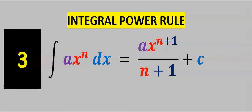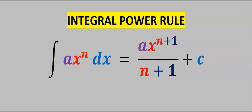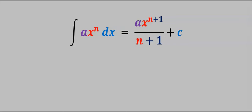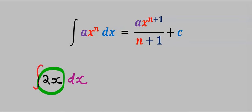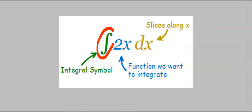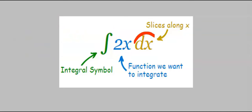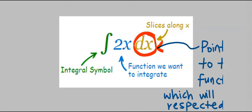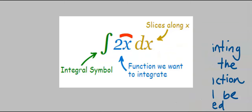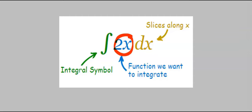Next, integral power rule. This formula is usually applied to some basic functions. For example, using this formula let's integrate 2x. The integral symbol is simply instructing us to apply integration, while the dx is pointing to the function which will be respected as we integrate — and here we are going to respect x.